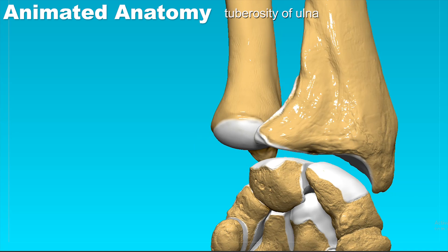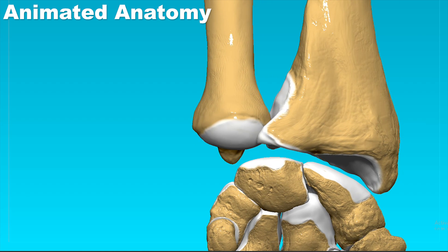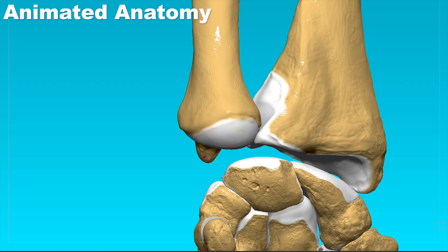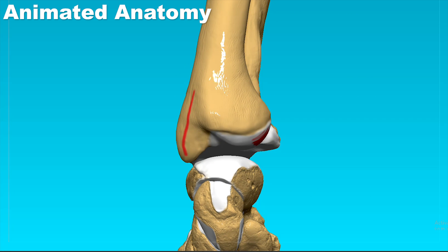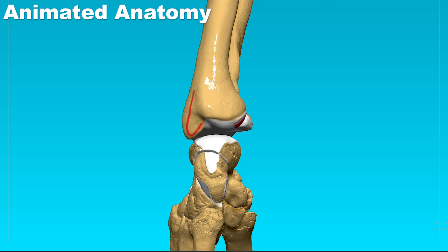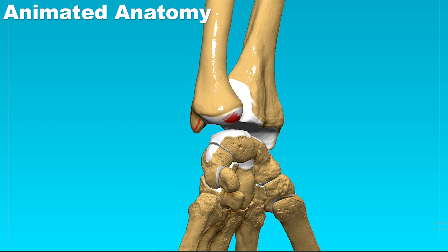If we look at the distal part of the ulna, we can see the head of the ulna. The head of the ulna carries the articular surface for the articular disc that we will see shortly. It also carries the articular surface laterally for the ulnar notch on the radius. We can also see the styloid process projecting more distally than the articulating surface for the disc.